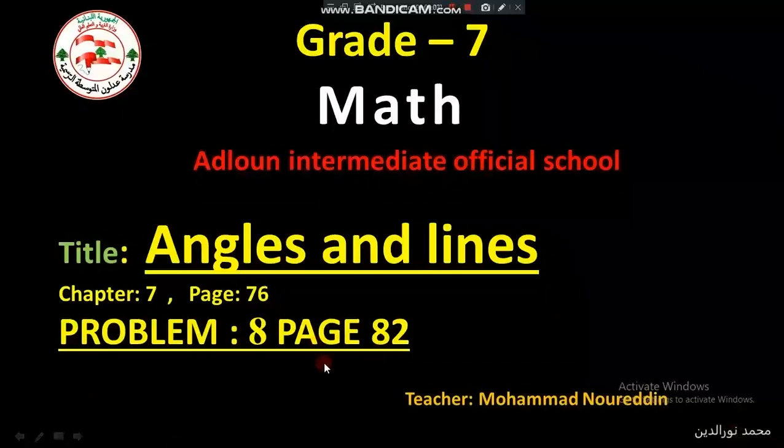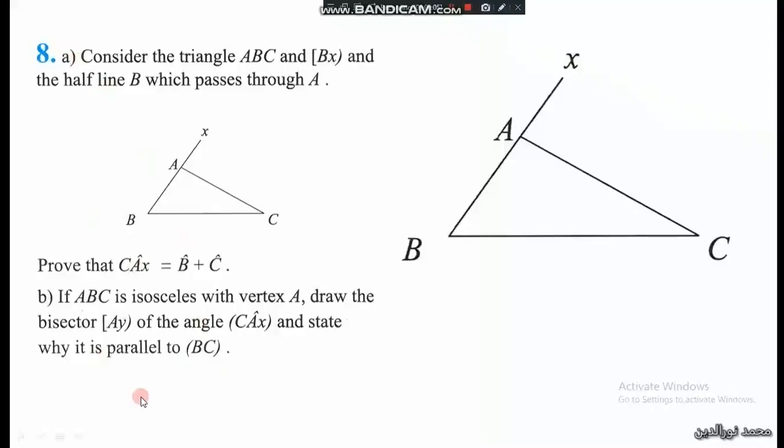Problem 8 on page 82. Consider the triangle ABC and BX, the half-line or semi-straight line BX which passes through A. So it's a straight line BAX, okay.